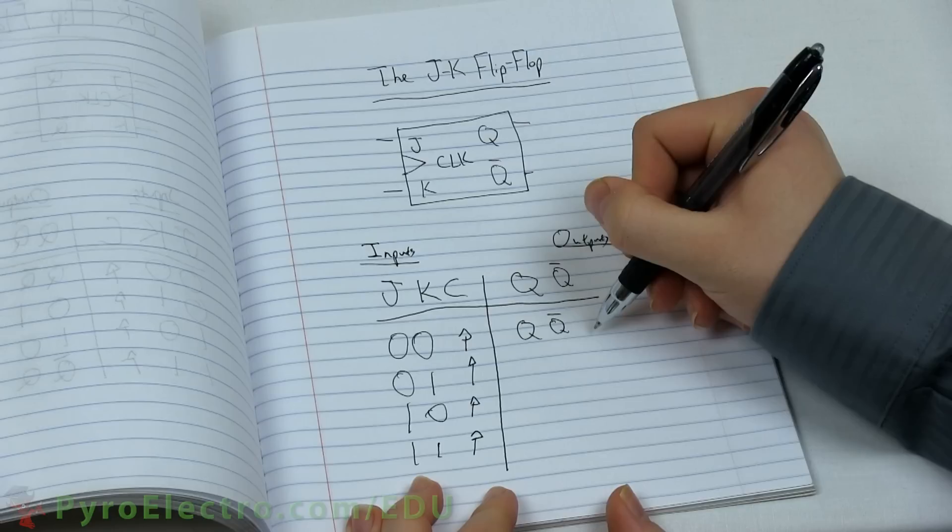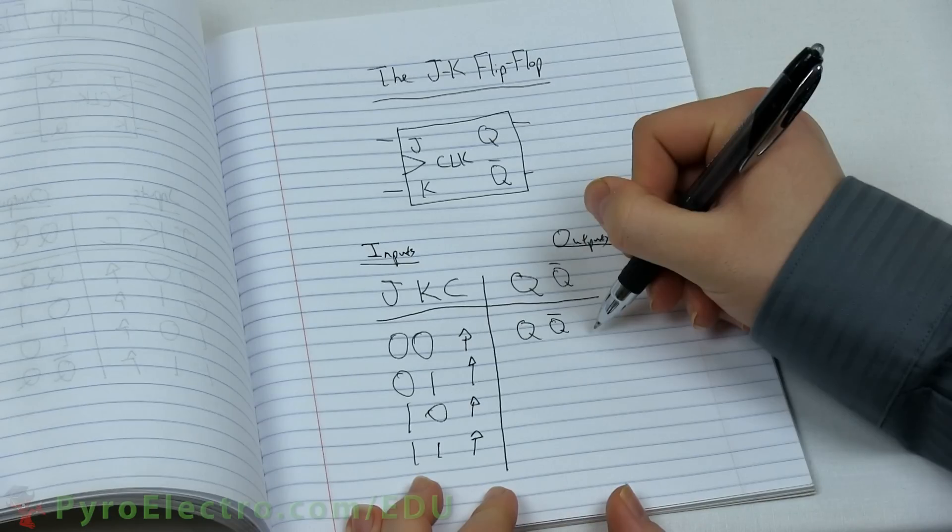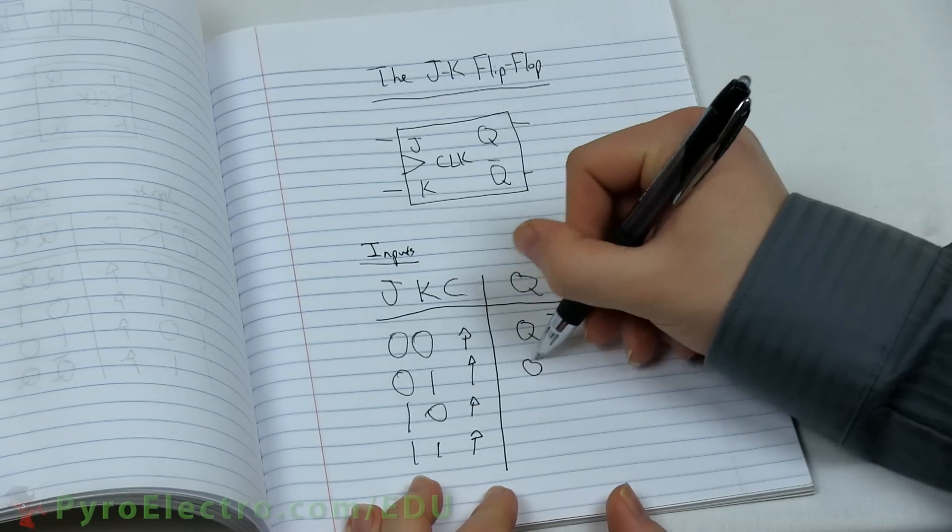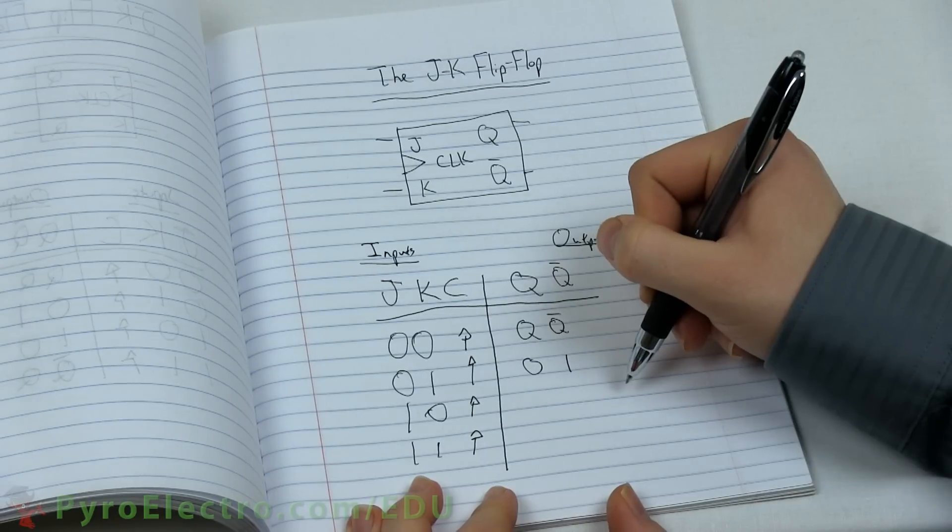Next, when JK are 0, 1 and again when the clock goes from logic 0 to logic 1, the output will be Q is logic 0 and Q bar logic 1. Keep in mind, the output will hold this state until different input is detected.